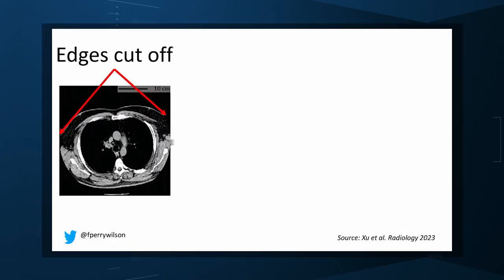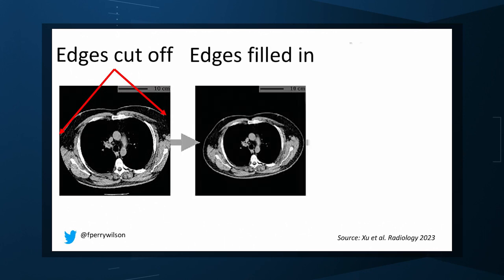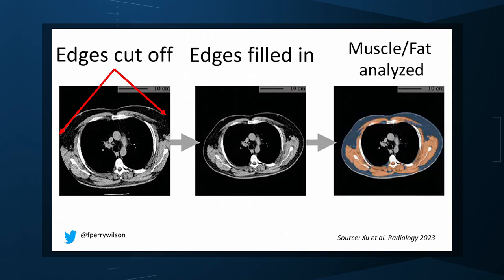These CT scans form an incredible dataset, as they are all collected with nearly the same parameters. The new paper asks: can we get information about body composition from these scans, and can it help to risk-stratify these patients? They took 20,768 individuals with CT scans done as part of the low-dose lung cancer screening trial and passed their scans through the automated data pipeline. One cool feature: depending on body size, sometimes the edges of people in CT scans are not visible, but the pipeline accounts for this, extrapolating what the missing pieces look like from what is able to be seen.